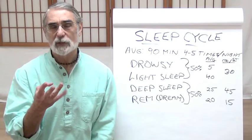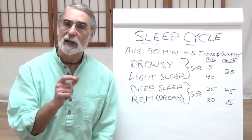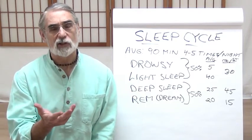You see, we sleep in cycles. Each cycle is approximately 90 minutes. We go through four to five cycles each night.